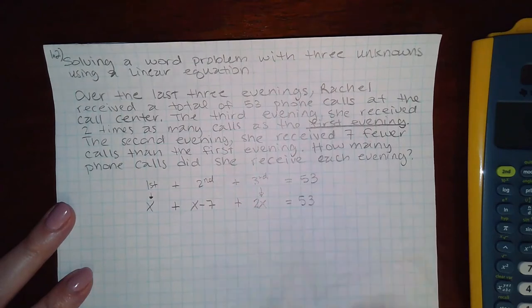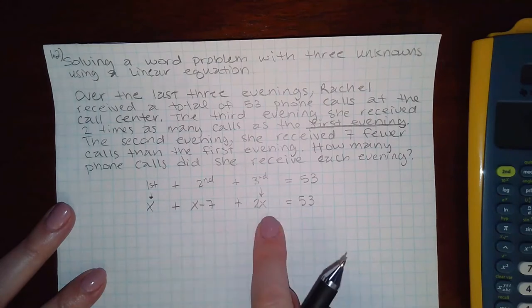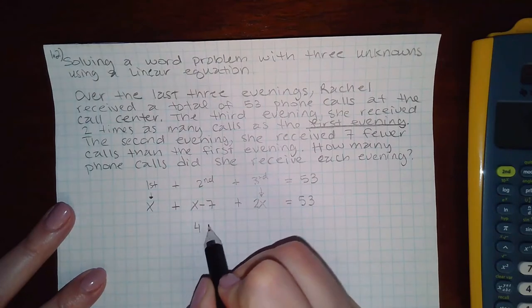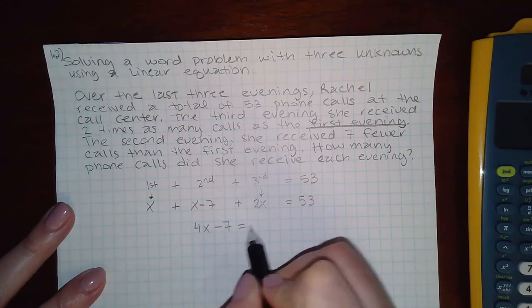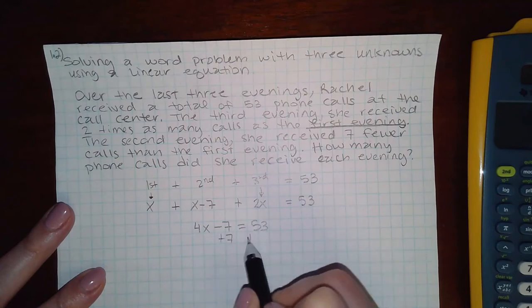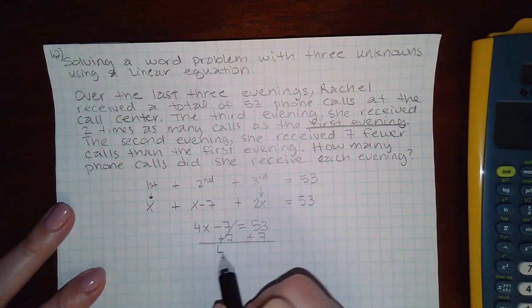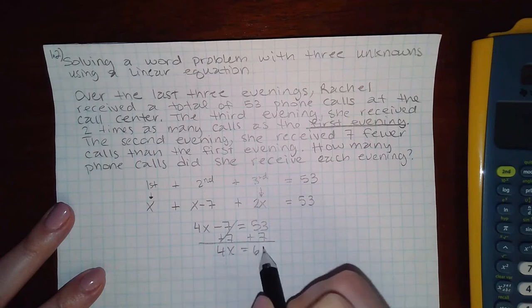And now I have the expression that I need in order to solve for x. So we combine all of our like terms, we get 4x minus 7 equals 53. If I add seven to both sides, I get 4x equal to 60. And then if I divide by four on both sides, I get 15.